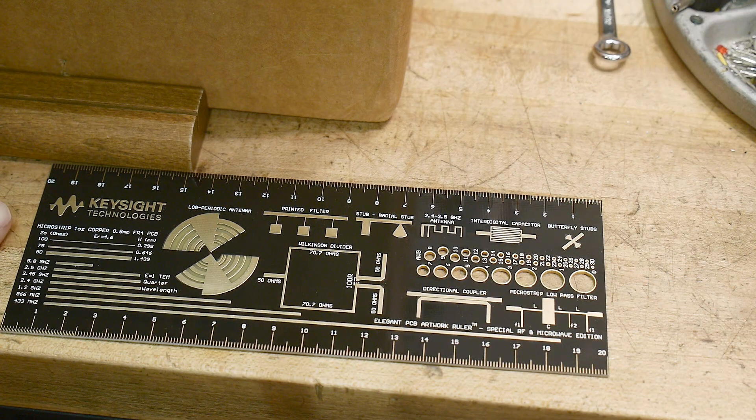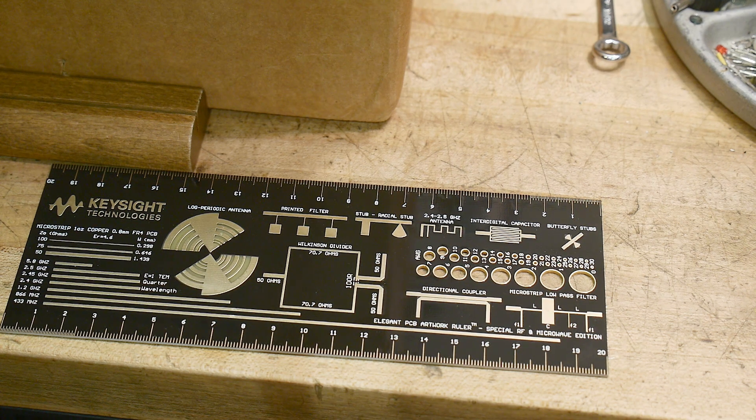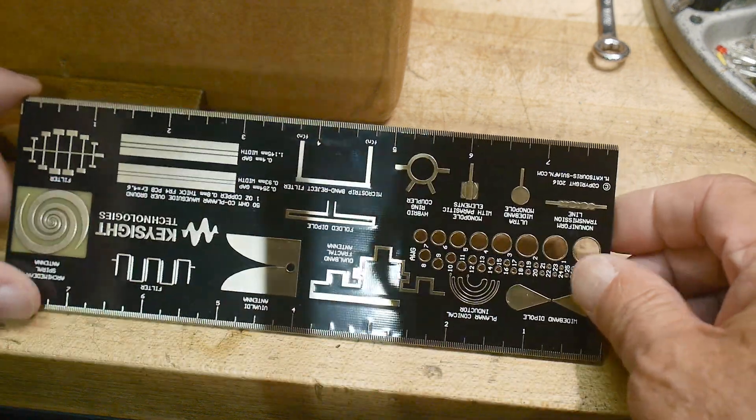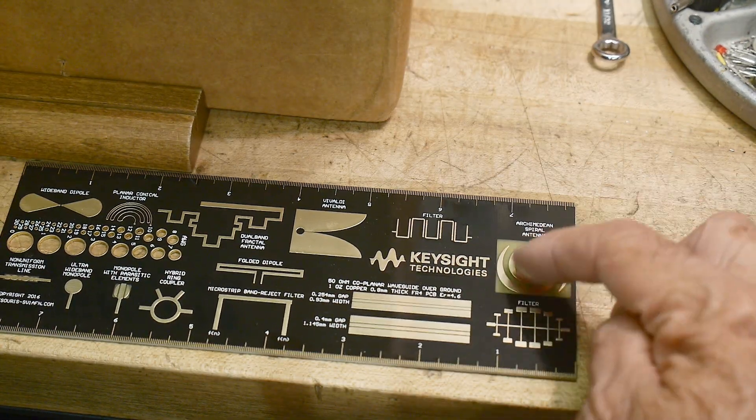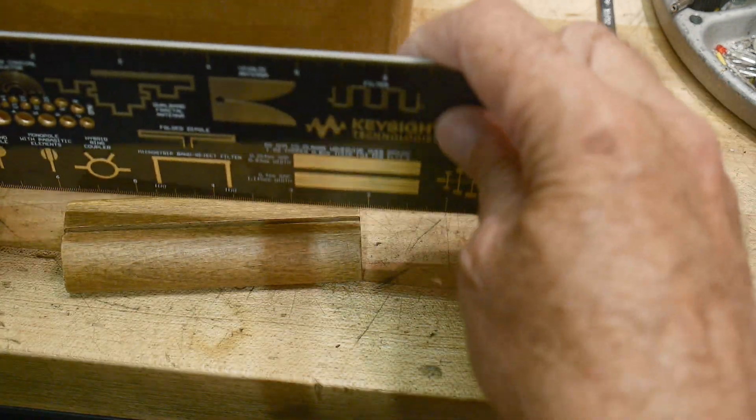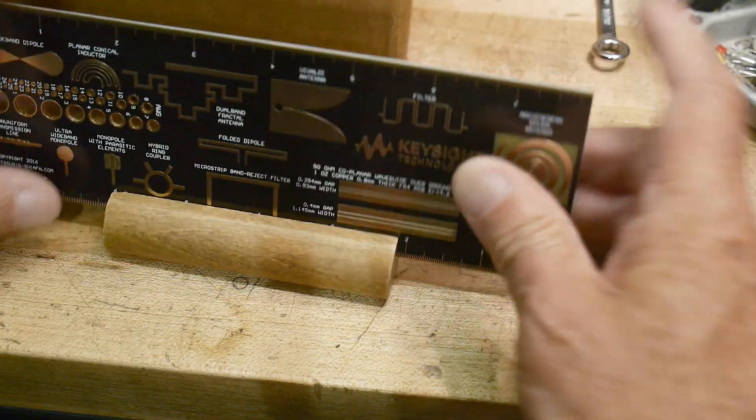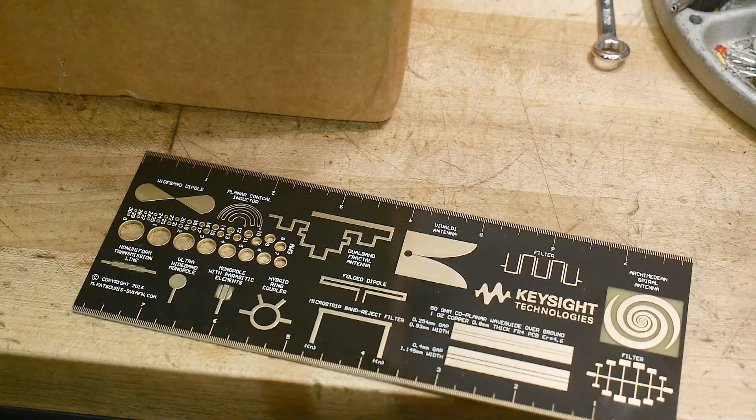So yeah, microstrip, one ounce copper, FR4, 0.8 millimeter, blah blah blah blah blah. Pretty cool ruler. I've got a big collection of rulers, so cool antenna. So I will add that. I guess it comes to a little thing here if you want to display it. Okay, anyway, that's in box number one. That's a nice box.